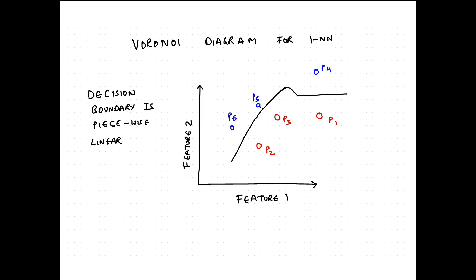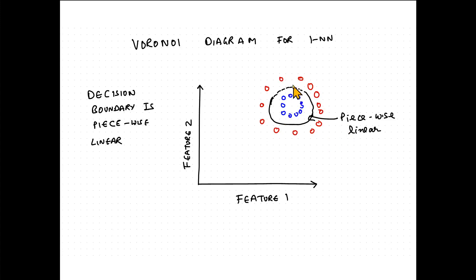Let's extend this logic to a more interesting classification boundary. Now the red points form an outer circle and the blue points form an inner circle. You might think the classification boundary would be a circle, but it is not. It would still be piecewise linear, but with so many small piecewise linear components that it looks fairly similar to a circle.